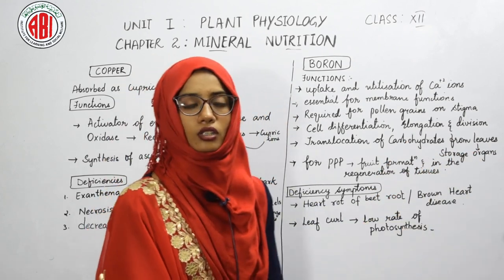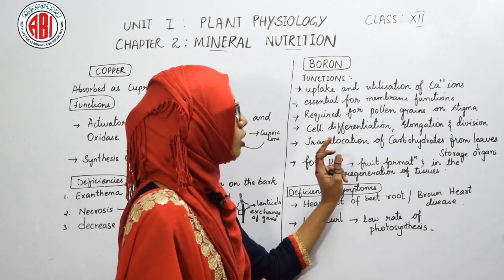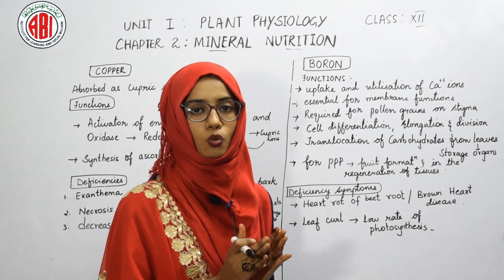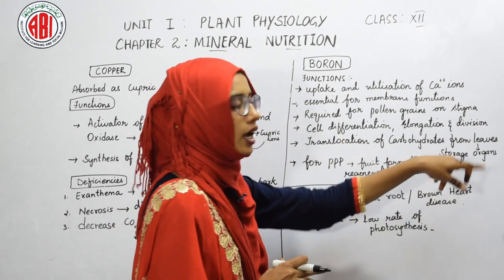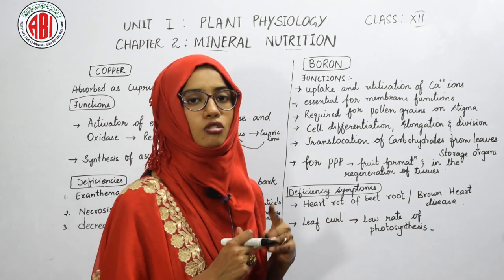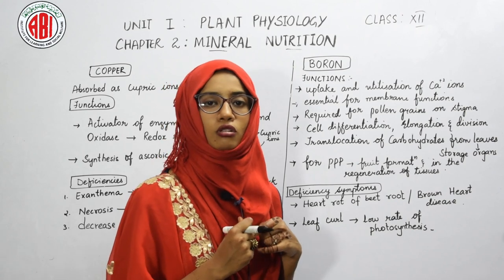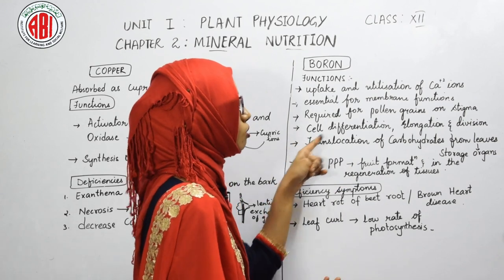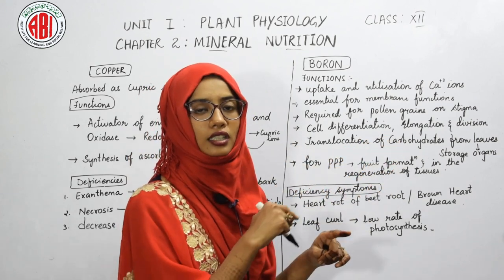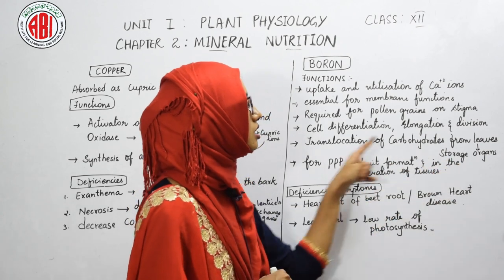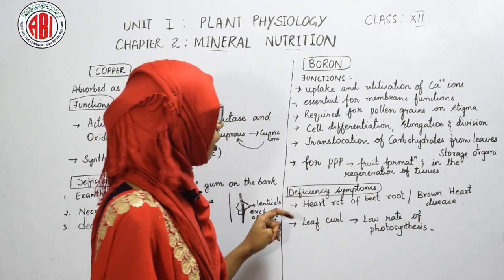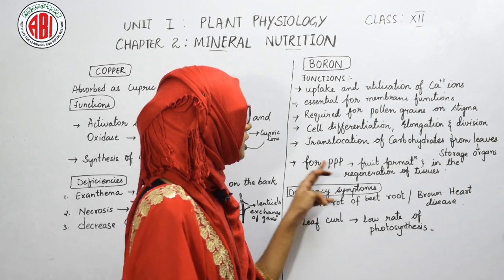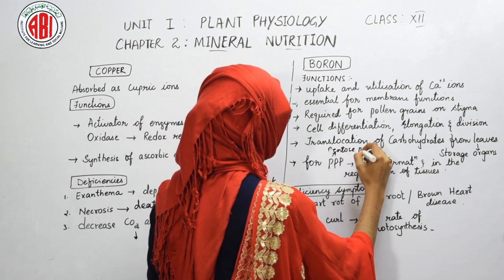Boron also helps in the translocation of carbohydrates from leaves to storage organs. Leaves are the sites of photosynthesis, where carbohydrates are produced and then need to be translocated to various tissues and cells throughout the plant body. This translocation is carried out in the presence of boron. Boron is also required for the pentose phosphate pathway (PPP).